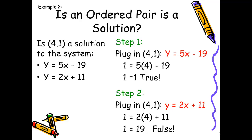In example two, we are asked: is the ordered pair (4, 1) a solution to the system y equals 5x minus 19 and y equals 2x plus 11? My first step is to plug the ordered pair into the first equation, substituting 4 for x and 1 for y. I get 1 equals 5 times 4, which is 20, minus 19 — and yes, 1 does equal 1, so that is true.